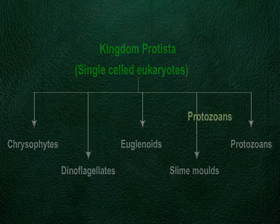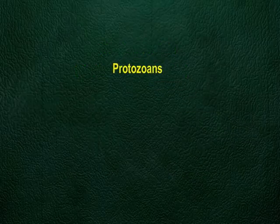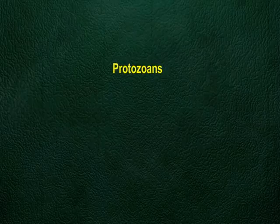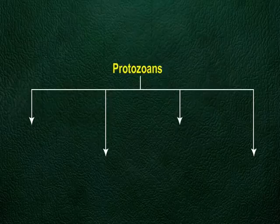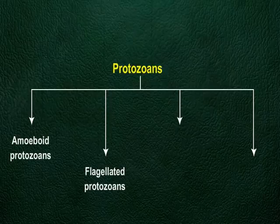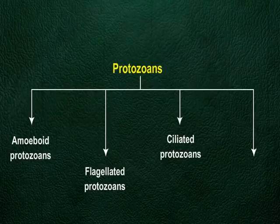Here we will study about protozoans, which are composed of the most popular organisms. Protozoans are further classified into four major groups: Amoeboid protozoans, Flagellated protozoans, Ciliated protozoans, and Sporozoans.